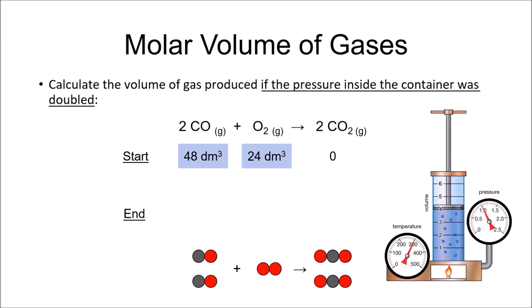Now if the pressure inside the container was doubled, the volumes of reactants would be halved to 24 and 12 respectively, but so would the volume of carbon dioxide produced as it is inside the same container. We do not need to use the ideal gas law to convert the volumes into moles as the ratio remains unchanged.